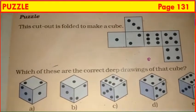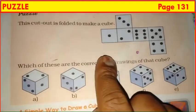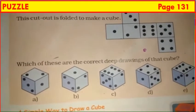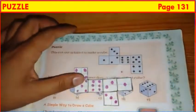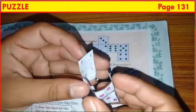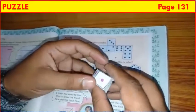See children, one puzzle is given to you on page 131 of your textbook. This cut out is given. Cut it and fold it to make a cube. After that, check out of these five deep drawings of a cube, A, B, C, D and E, which one is correct? More than one option can also be right. So, you are supposed to check all options. See children, I have taken a paper and drawn it similar to the given cut out. Now, I will fold this paper and make a cube. See, I have made a cube.